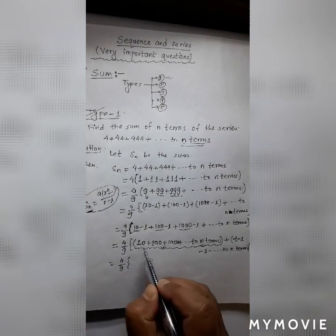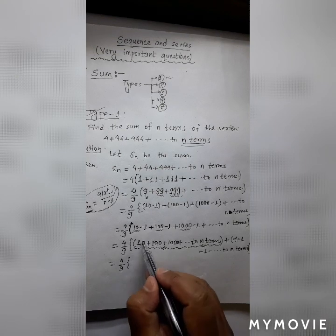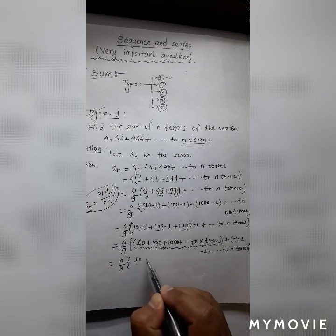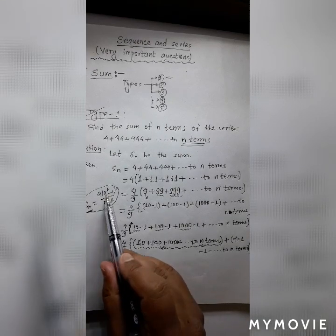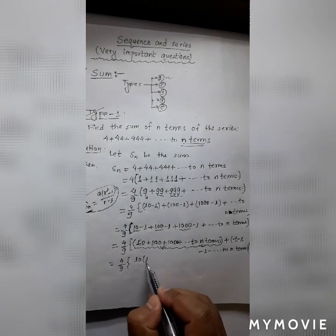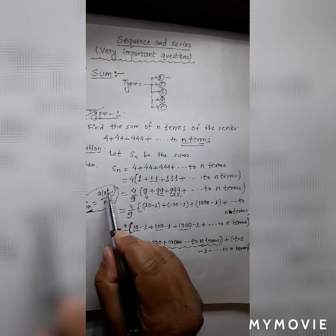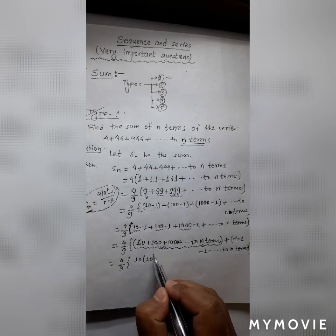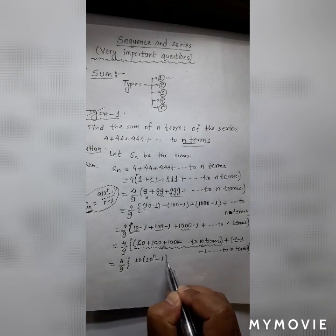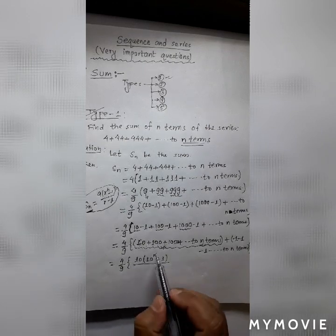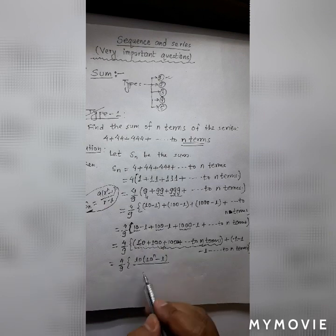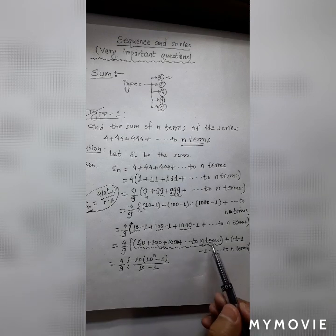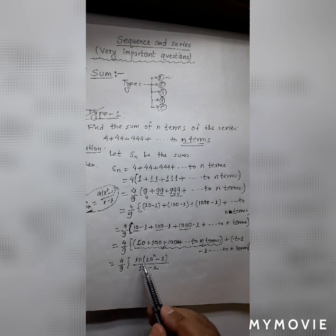Here a equals 10 and r equals 100 by 10 equals 10. So applying the geometric series formula: S_n equals 10 times (10^n minus 1) divided by (10 minus 1), which gives 10 times (10^n minus 1) divided by 9. This is the sum of the first series.